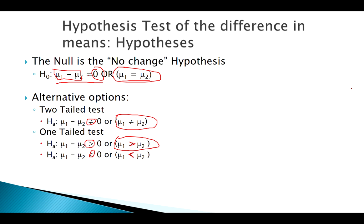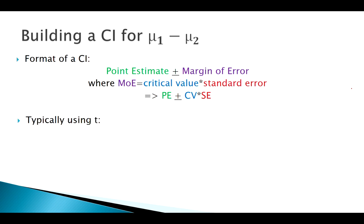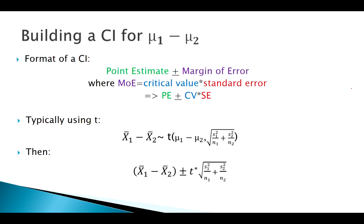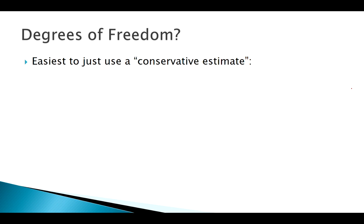For confidence intervals with two groups, we'll generally use t since we rarely can assume normality of both populations. The confidence interval format is: point estimate (x̄₁ minus x̄₂) plus or minus t critical value times the standard error. The next question is: what do we use for degrees of freedom with two groups? The easiest approach for now is our conservative estimate — just use the minimum of the two group sizes, n₁ and n₂.